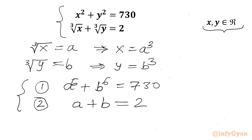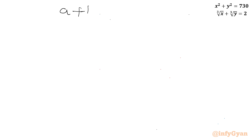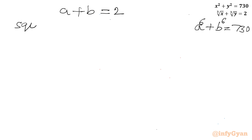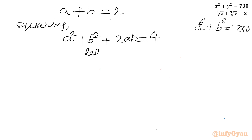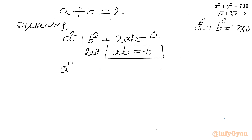Now we have to solve this new system of equations for the values of a and b. I will use the second equation a plus b equal to 2, and utilize the first. Squaring both sides gives a squared plus b squared plus 2ab equal to 4. Now let ab equal to t, so a squared plus b squared equals 4 minus 2t.